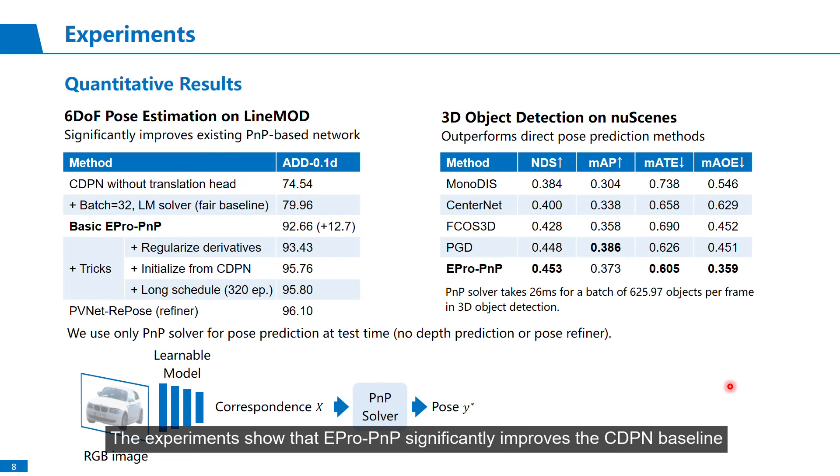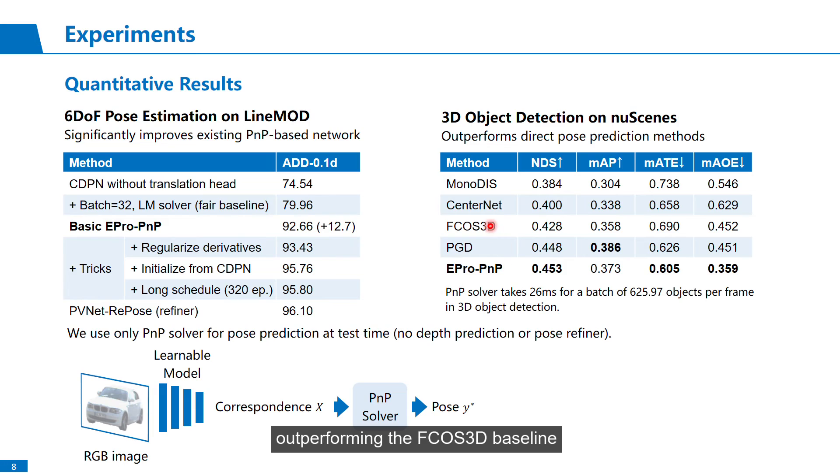The experiments show that EPro-PnP significantly improves the CDPN baseline, and with some training tricks, it is able to compete against state-of-the-art. We also achieved the best NDS score on the 3D object detection task, outperforming the FCOS3D baseline, and all other methods of the time. All of these achieved by only the standard PnP pipeline. No depth prediction, no pose refiner. This makes our method very efficient compared to some hybrid methods.